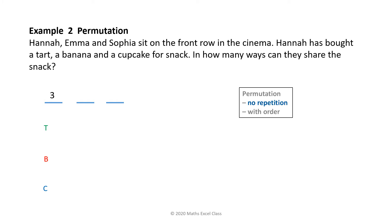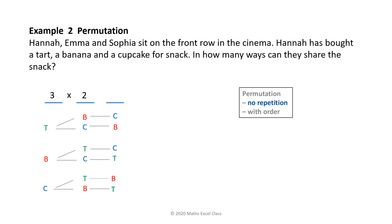If Hannah has eaten the tart, then Emma can choose banana or cupcake — Emma is left with two choices, and these two choices match each of Hannah's three choices, giving three times two — six ways to choose the snack. Then one snack is left for Sophia. So altogether, three times two times one — there are six ways to choose the snack.